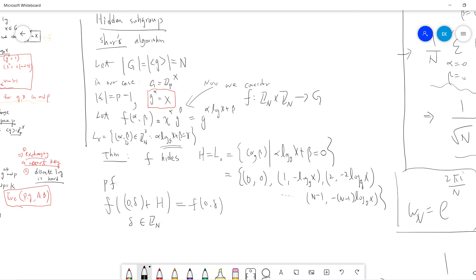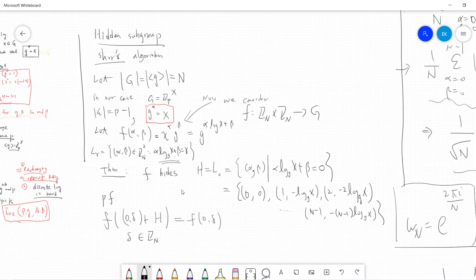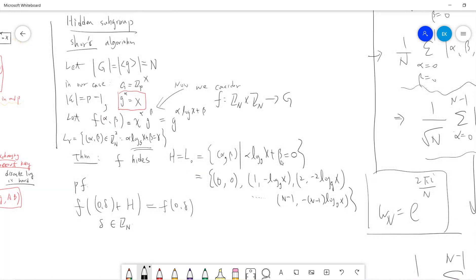So f hides h_0. Basically h_0 is gamma equals 0. Now h_0 contains the set of things like (0,0), (1, -log_g x), because if you let alpha equal one you get this.